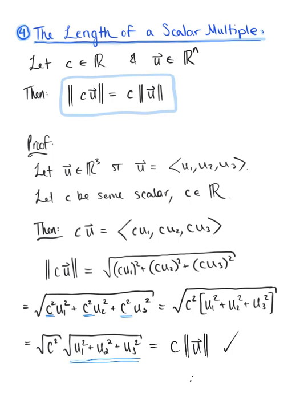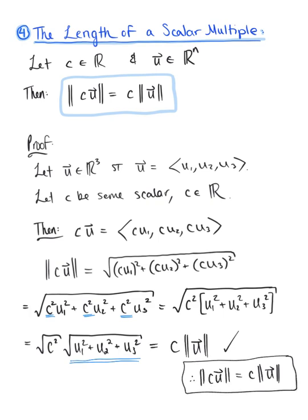Therefore we've confirmed that the magnitude of a scalar multiple equals the scalar multiple of the magnitude. This is a really powerful shortcut to simplify computations: if you see a scalar multiple on a vector, pull it out.